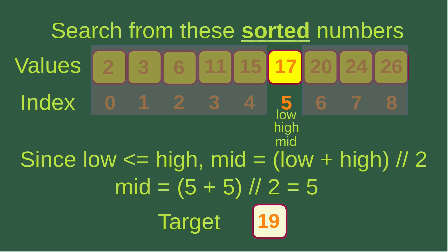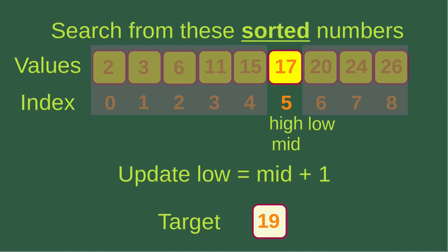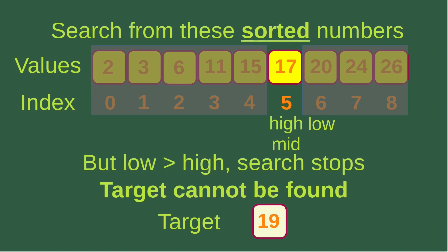Since both high and low indices are the same, we find the mid value, which is equal to low plus high divided by two using integer division, which is five. So all three indices are at index five. We pick up the value corresponding to the middle index, which is 17. But the target is larger than that value, so we handle the second half of the remaining portion. We update the low index to mid plus one, so low becomes six. But now the low index is larger than the high index. In this case, we say that the search is unsuccessful — the target cannot be found from the array.